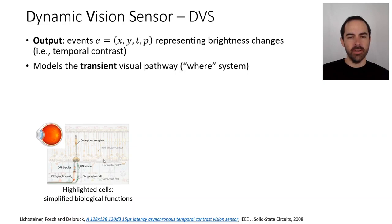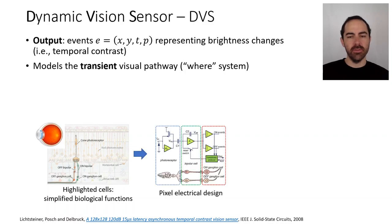We are leaving out the horizontal cells and the Amacrine cells. We are mostly concentrated on the photoreceptor, the bipolar and the ganglion cells. From these simplified biological functions, we model every pixel of the DVS.